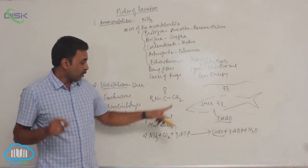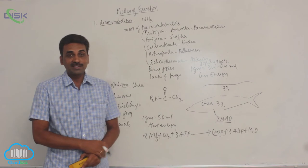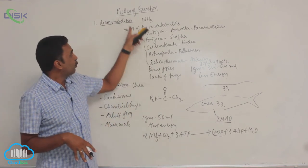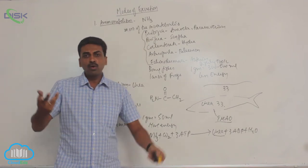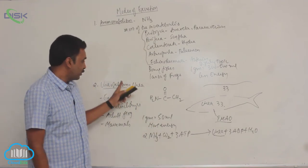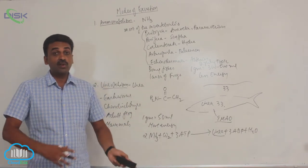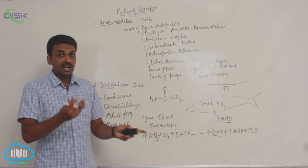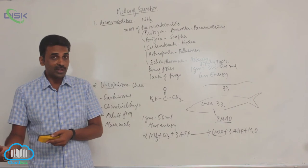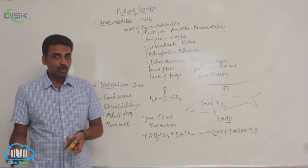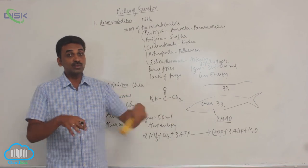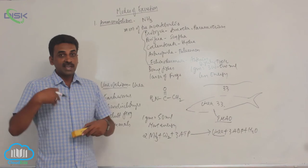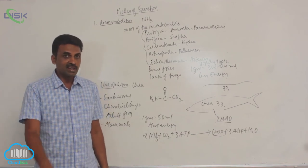So compared to ammonia, less water is utilized for urea. Ammonotelic animals have abundant water, but ureotelic animals cannot afford to lose that much water through urine. To discard less water through urine, instead of ammonia, they are choosing urea as the excretory product. In humans, ammonia is converted into urea through the ornithine cycle inside the liver.